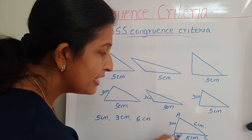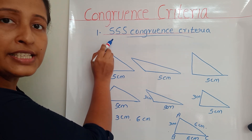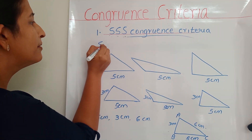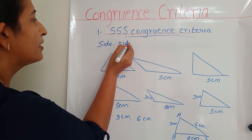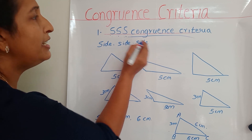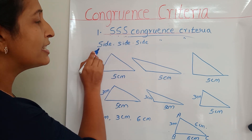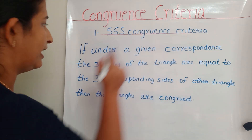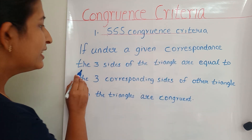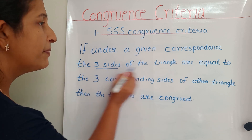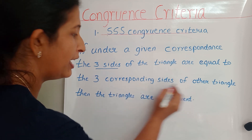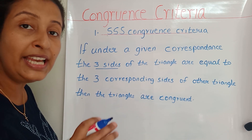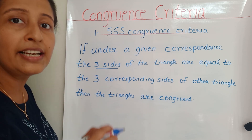Anna's and Alan's triangles are congruent! So to find a congruent triangle, we need three things: side, side, and side — that's why we call this the SSS congruence criteria, where each S stands for side. From this criteria, we can say that we only need three sides. We have to check all three sides.